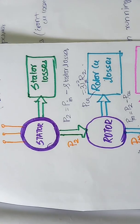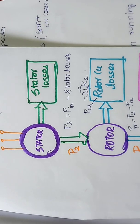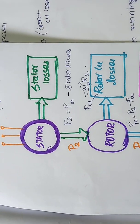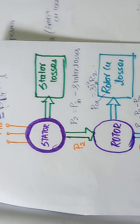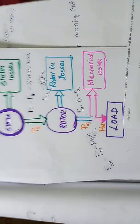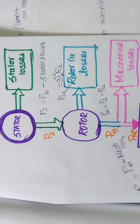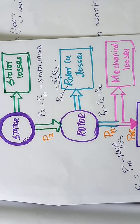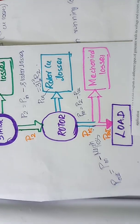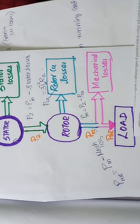So copper loss is i²R loss, specifically 3i²R for the rotor in 3-phase. The rotor rotates, and then the load is connected. There will be mechanical losses due to friction. So this completes the power flow diagram.